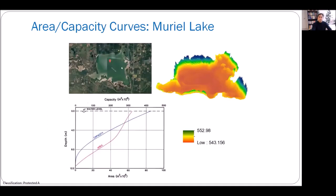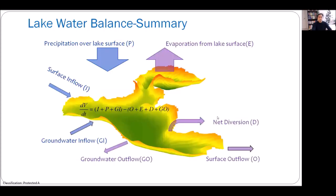This is an example of Mural Lake in Alberta — you can see the 3D diagram. There are two types of curves here: one is the capacity, which is the volume, and the second is the area. It's showing how capacity and area change with depth or elevation.